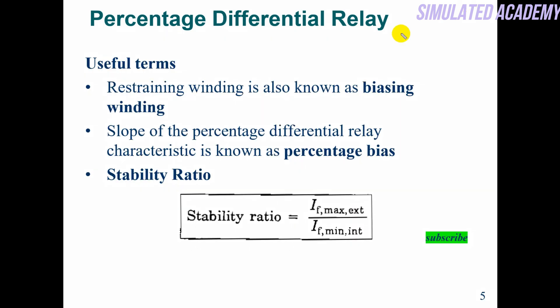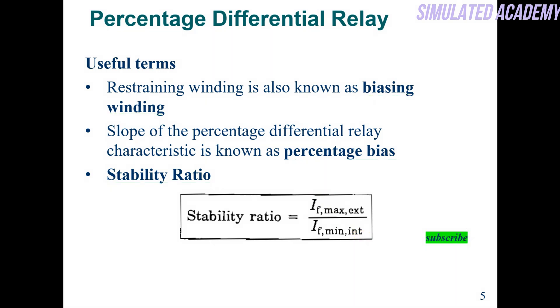Useful terms: the restraining winding is also known as the biasing winding. The slope is called the percentage bias or stability ratio — that is, I_max for the external fault and I_min for the internal fault.